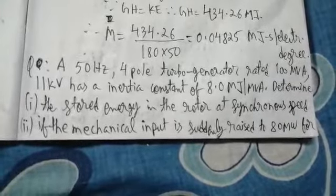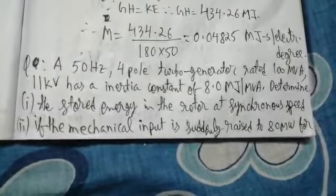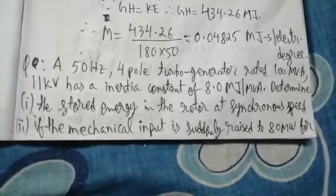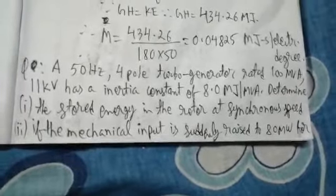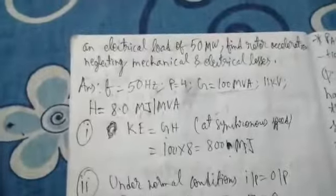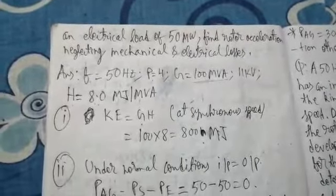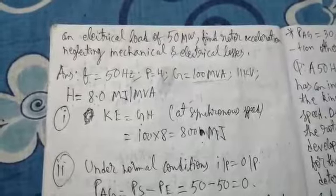It has an inertia constant of 8 megajoules per MVA. Determine: (1) the stored energy in the rotor at synchronous speed, (2) if the mechanical input is suddenly raised to 80 megawatts for an electrical load of 50 megawatts, find rotor acceleration neglecting mechanical and electrical losses.